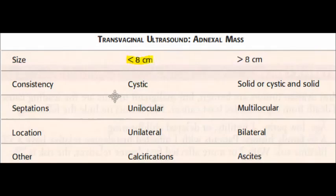For transvaginal ultrasound findings: mass size will be less than eight centimeters in the case of benign, while malignant will be greater than eight centimeters. Consistency can be cystic, solid, or both. Septation will be unilocular for benign, but multilocular for malignant. Location: unilateral for benign, bilateral for malignant in adnexal mass. For benign, there will be calcification.